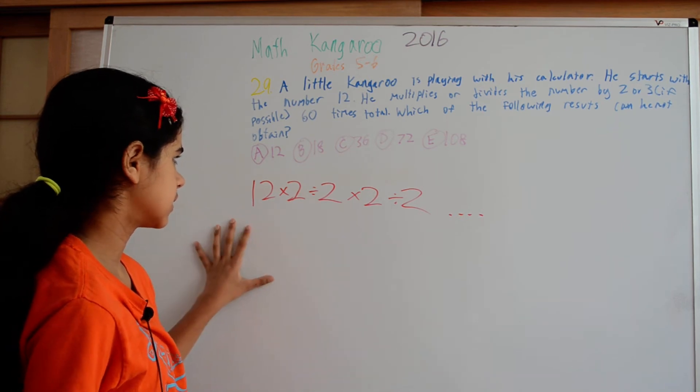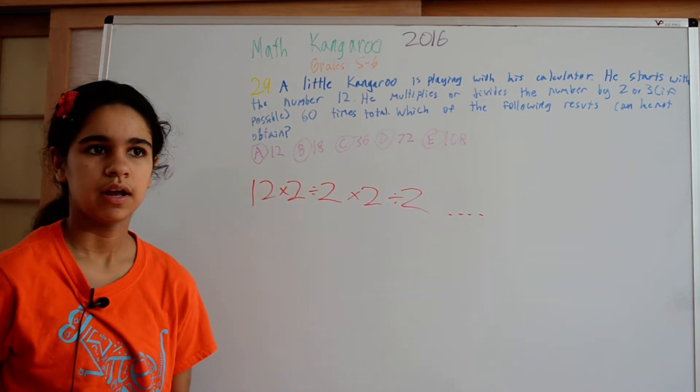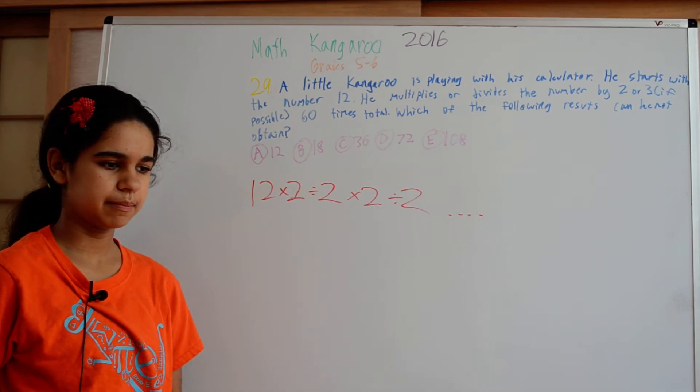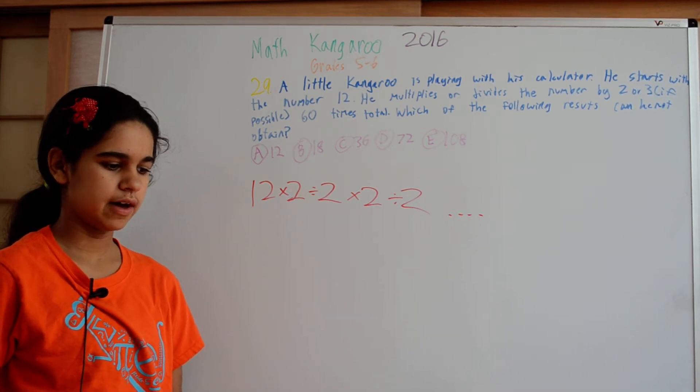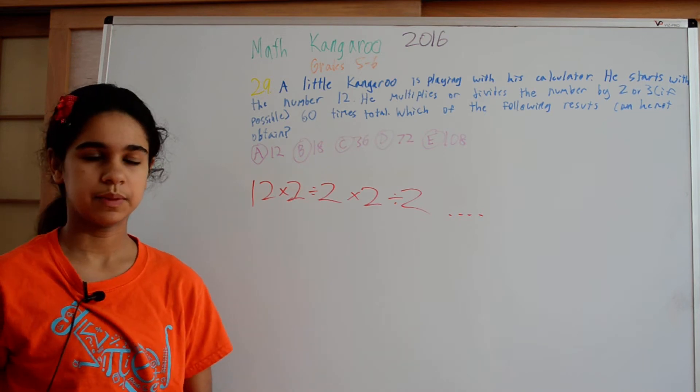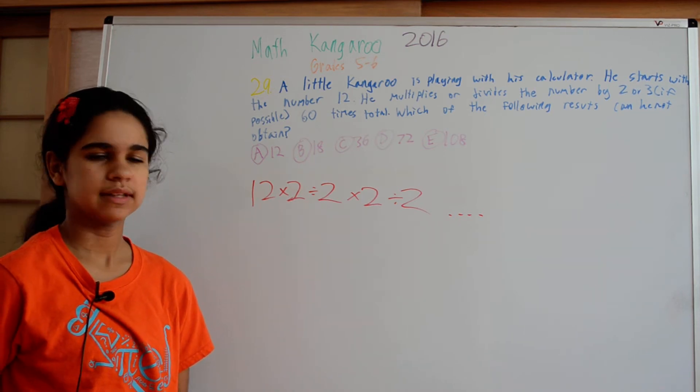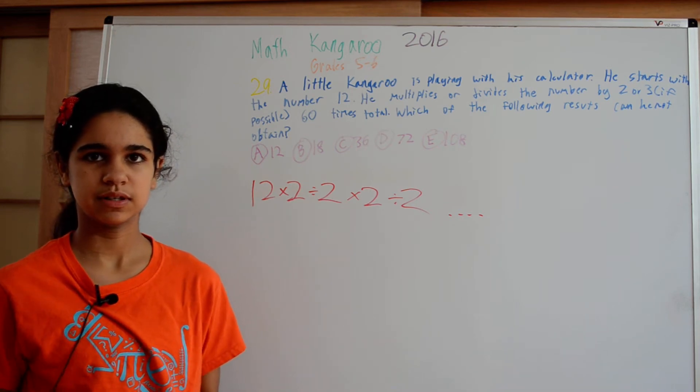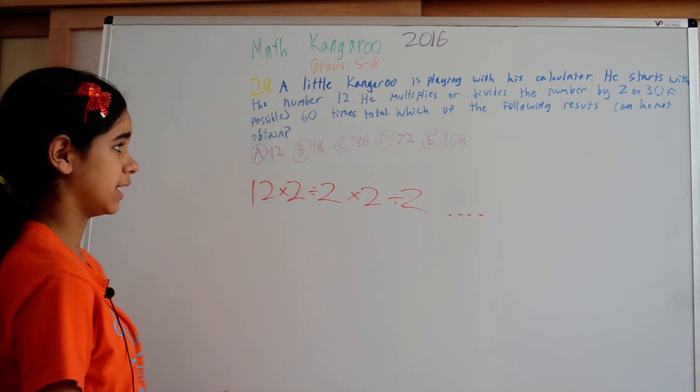And so now we can notice something here. If we take a number, any number, if we get to a number and we have an even number of operations left that we can do, we can get that number again at the end just by doing something like multiplying by 2 and dividing by 2, or multiplying by 3 and dividing by 3.